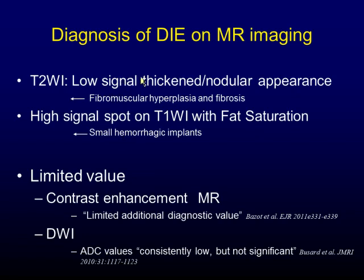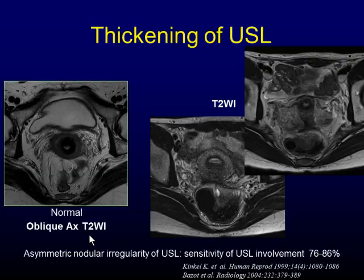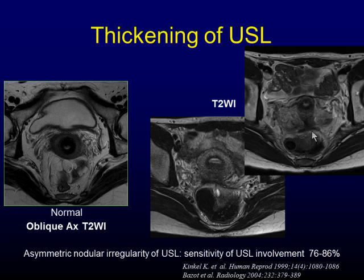Since deeply infiltrating endometriosis is closely related with adhesion, the MR findings are very similar. Contrast-enhanced MRI and diffusion-weighted image are not so useful for evaluating deep lesions. In a normal uterus, the uterosacral ligament is recognized as a thin smooth line on axial or oblique axial T2-weighted image. In cases of endometriosis, the ligament shows low signal intensity on T2-weighted image and is irregularly thickened at the attachment of the uterine cervix. Sometimes small nodules are found inside the ligament.